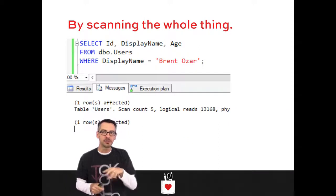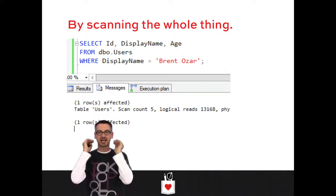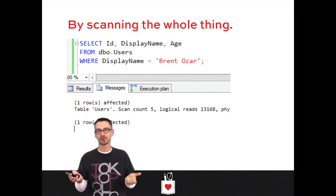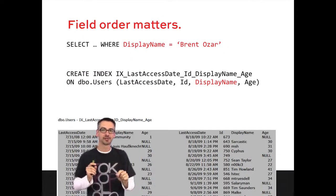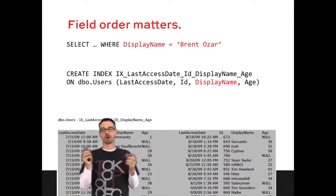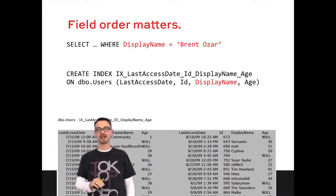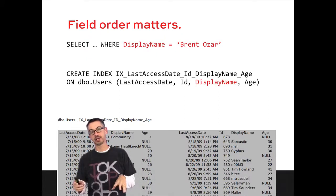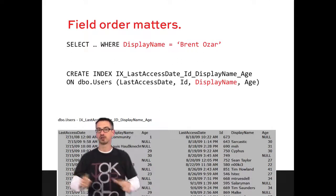This is why index usage DMVs are so interesting — it'll report that an index is getting used, but it's just getting scanned. Again, look at the number of logical reads: 13,000. SQL Server is using this index but scanning the whole thing. This is why field order matters. If display name isn't the first field in the index, that index is going to get scanned and not really used appropriately — it's kind of like a Sargeability problem, but here we just didn't put the index fields in the right order.